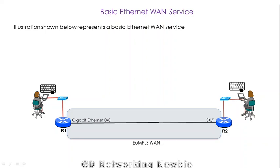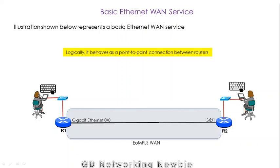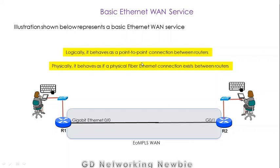Now we are going to discuss basic Ethernet Wide Area Network service. This illustration represents a basic Ethernet WAN service. From this router to this router we have a fiber in between them, and these are the interfaces on the router — Gigabit Ethernet 0/0 and Gigabit Ethernet 0/1. This basic Ethernet service logically behaves as a point-to-point connection between two routers — one source and one destination. Physically, it behaves as if a physical Ethernet connection exists between the routers.